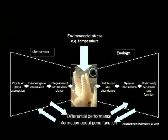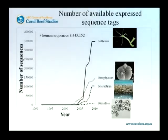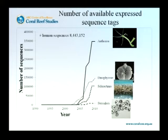Sounds simple. The problem, though, is that when we want to start looking at this for symbiodinium, we're starting from a very low starting point. When we started this work about five or six years ago, we knew a total of 32 different genes — not a lot to go on.